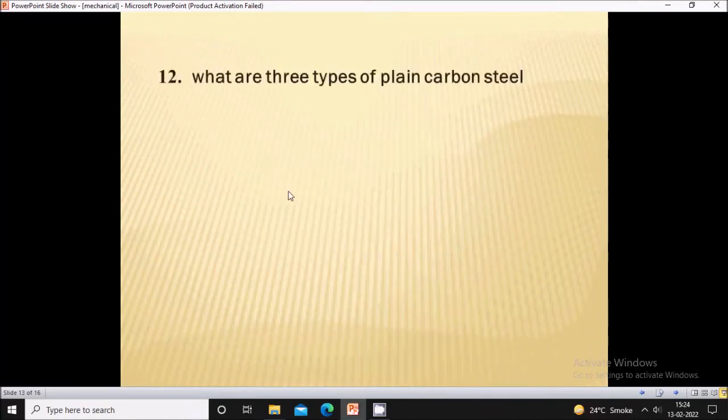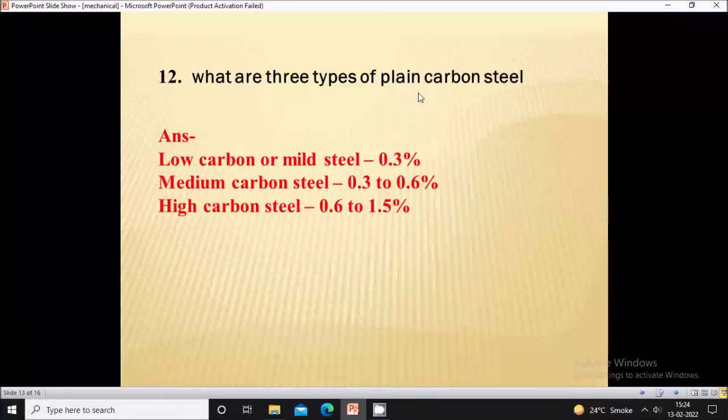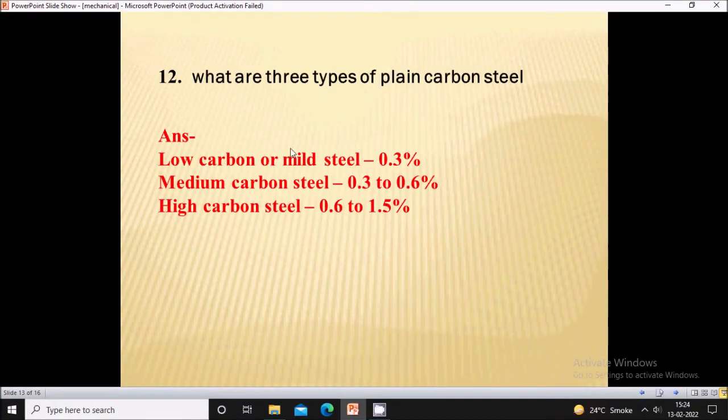What are the three types of plain carbon steel? Three types are: low carbon or mild steel with 0.3% carbon, medium carbon steel with 0.3 to 0.6% carbon, and high carbon steel with 0.6 to 1.5% carbon.